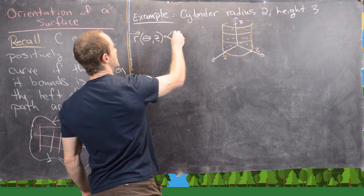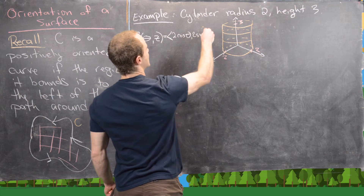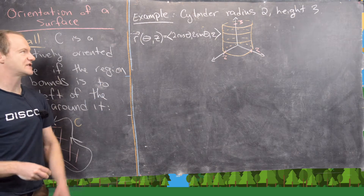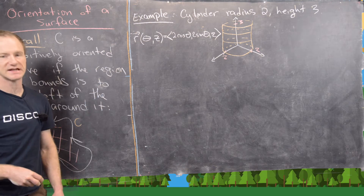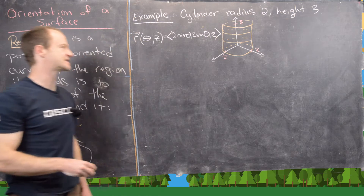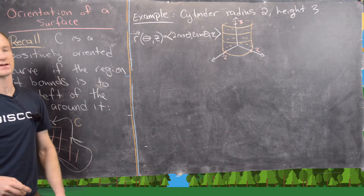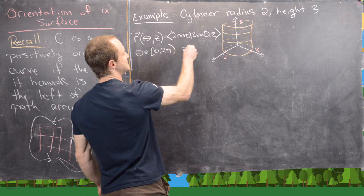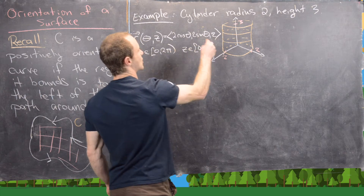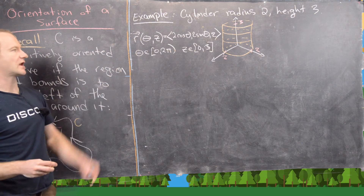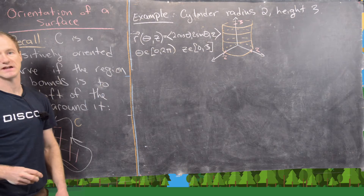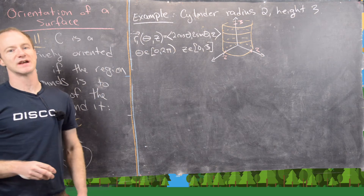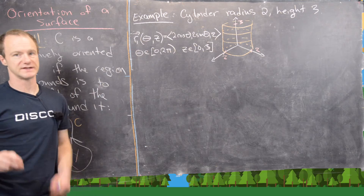So our parametrization R1(theta, z) equals (2 cos theta, 2 sin theta, z). Recall that standard cylindrical coordinates have x = r cos theta, y = r sin theta, z = z — we've done exactly that but fixed ourselves to a radius of 2. We take theta in [0, 2pi] and z in [0, 3] to draw the whole cylinder all the way around and only 3 units high. Let's call this R1, because I want to parametrize this another way to see what the orientations look like.